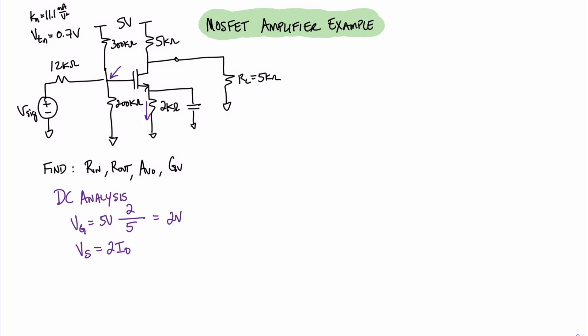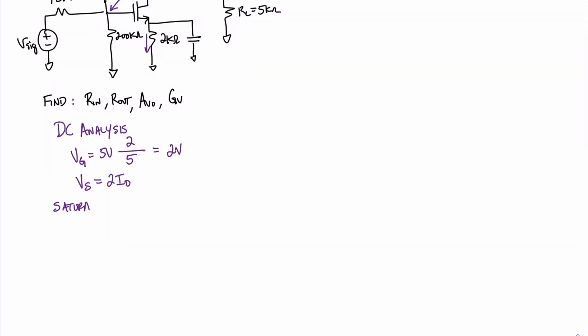Since this circuit is an amplifier, we assume that it's going to be operating in saturation mode. As a reminder, the saturation mode equation is ID equals one-half KN times (VG minus VS minus the threshold voltage Vt), that whole quantity squared. If we move the one-half over, we find that 2ID equals VS, so we can write: 2ID equals VS equals KN times (Vg minus Vs minus Vtn) quantity squared.